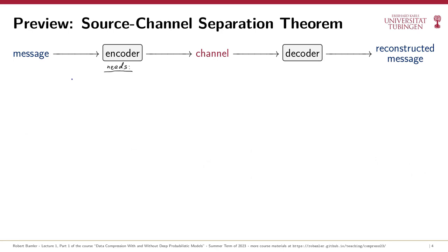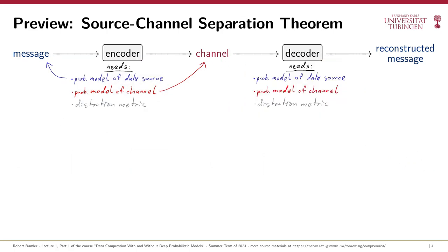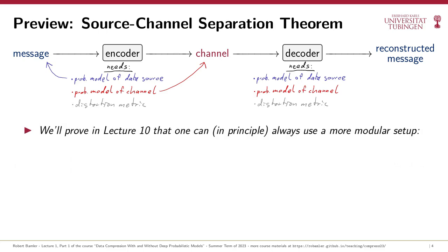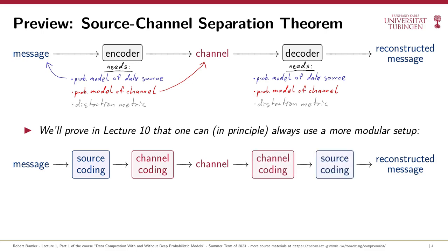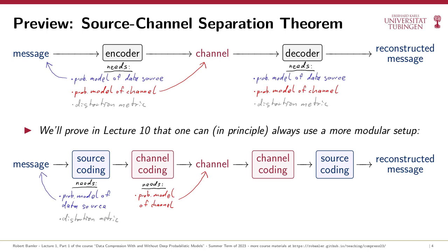Here's again our communication pipeline. So far we've said that the encoder has to replace redundancies intrinsic to the data source with different redundancies tailored to allow for error correction for the noisy channel. The source-channel separation theorem states that these two tasks can indeed be separated, at least in principle. You can split the encoder into two parts called source coding and channel coding, and the same for the decoder in reverse order. The important part is that the two source coding modules only use the probabilistic model of the data source — they are oblivious to details of the channel — whereas the channel coding modules only use the probabilistic model of the channel, oblivious to what kind of message you want to communicate.